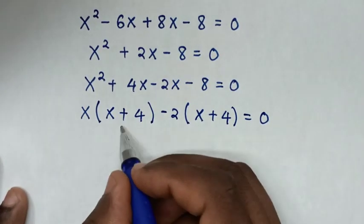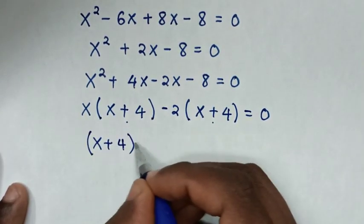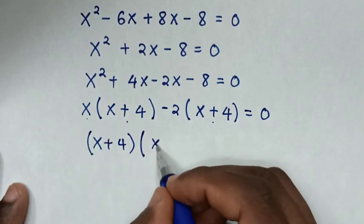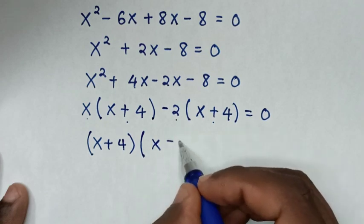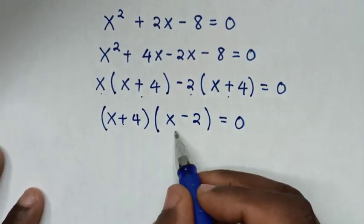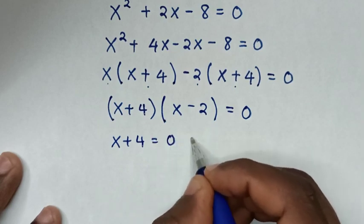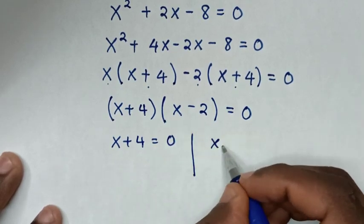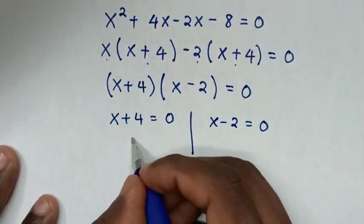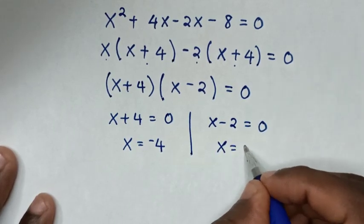Then from this equation, (x + 4) is common, so we take (x + 4) out: (x + 4)(x - 2) = 0. Then we'll have two solutions: x + 4 = 0, giving x = -4; and x - 2 = 0, giving x = 2.